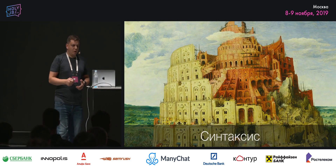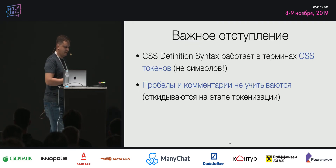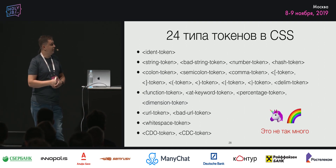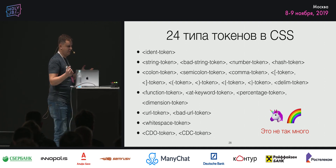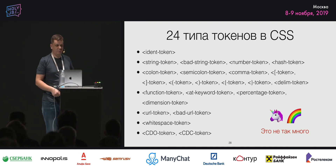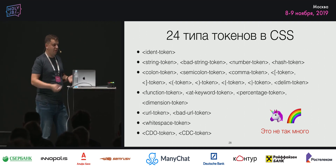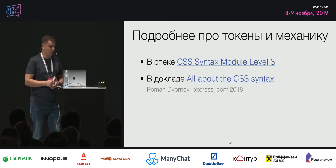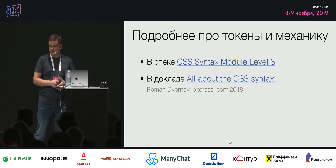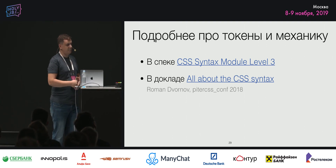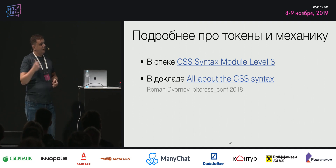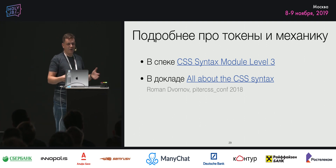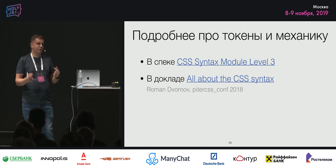Начнём с синтаксиса. Важный момент: сам синтаксис работает не с символами, он работает с токенами. В CSS есть некоторый набор токенов — их всего 24 типа, не так много. Запятая — это отдельный токен, двоеточие — тоже отдельный токен. Идентификатор, строка, число — это классические стандартные примитивы. Подробно о токенах описано в модуле CSS Syntax, а также в моём прошлогоднем докладе «All About CSS Syntax».